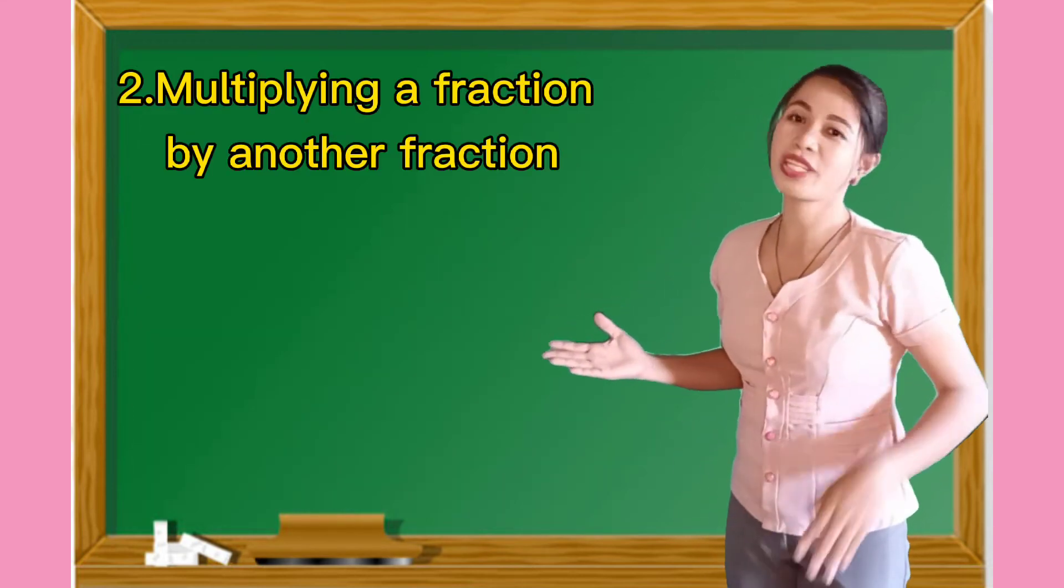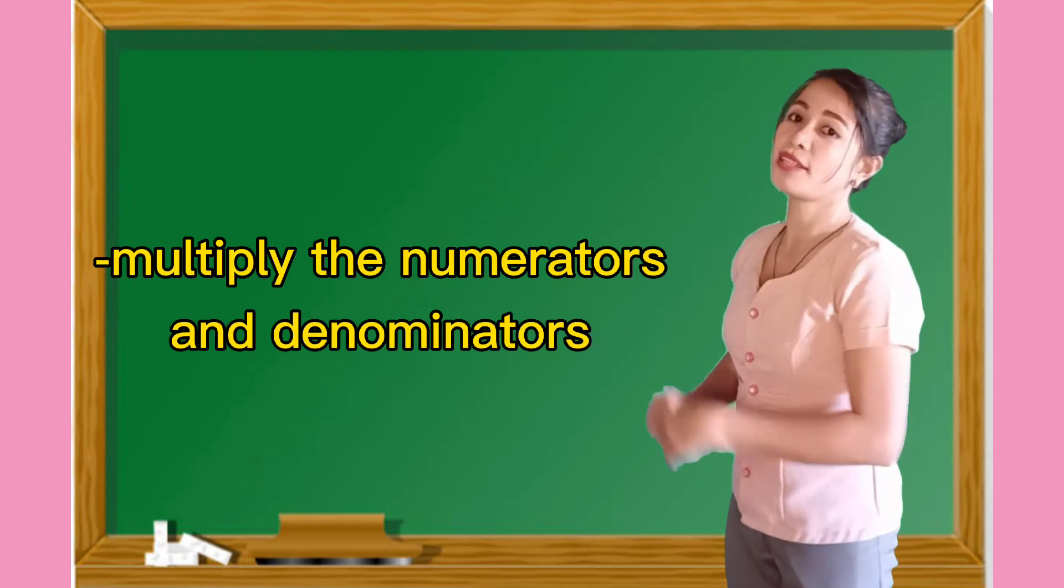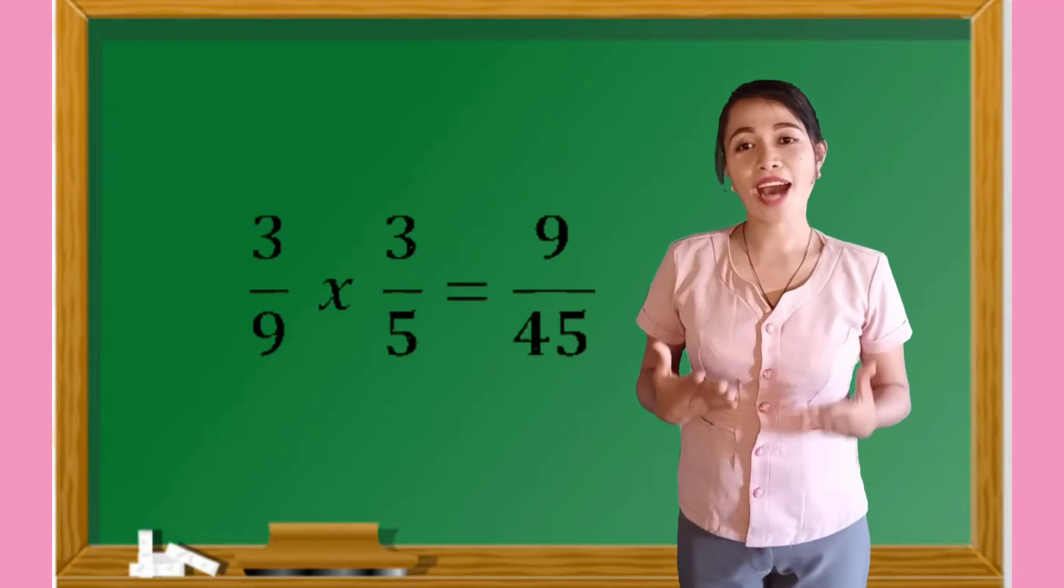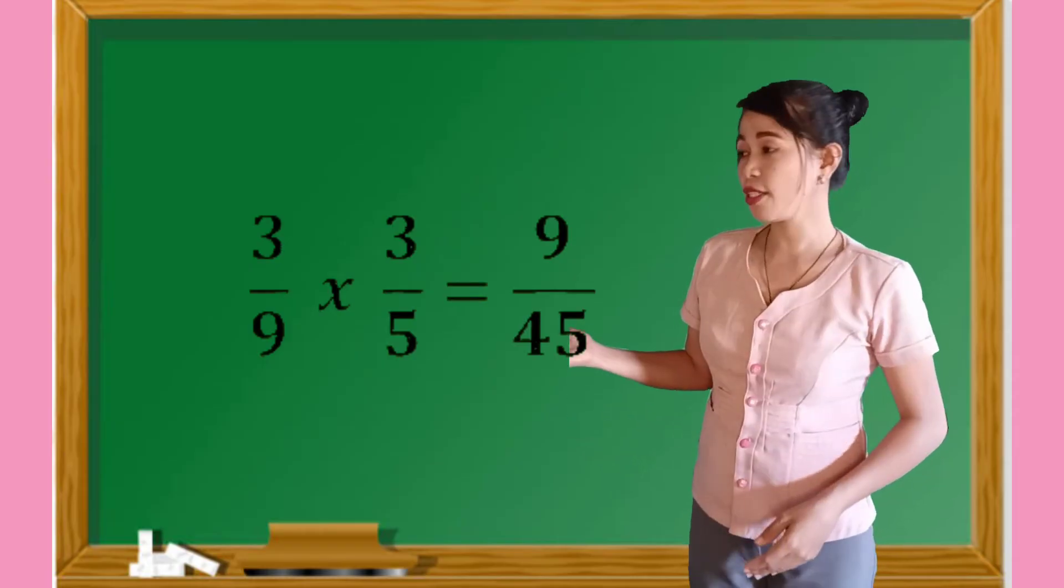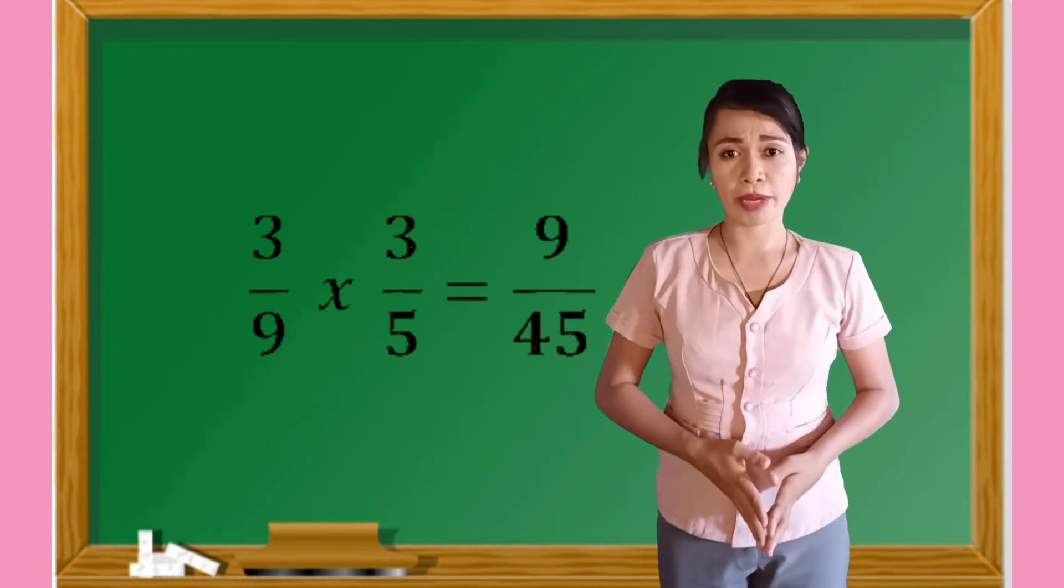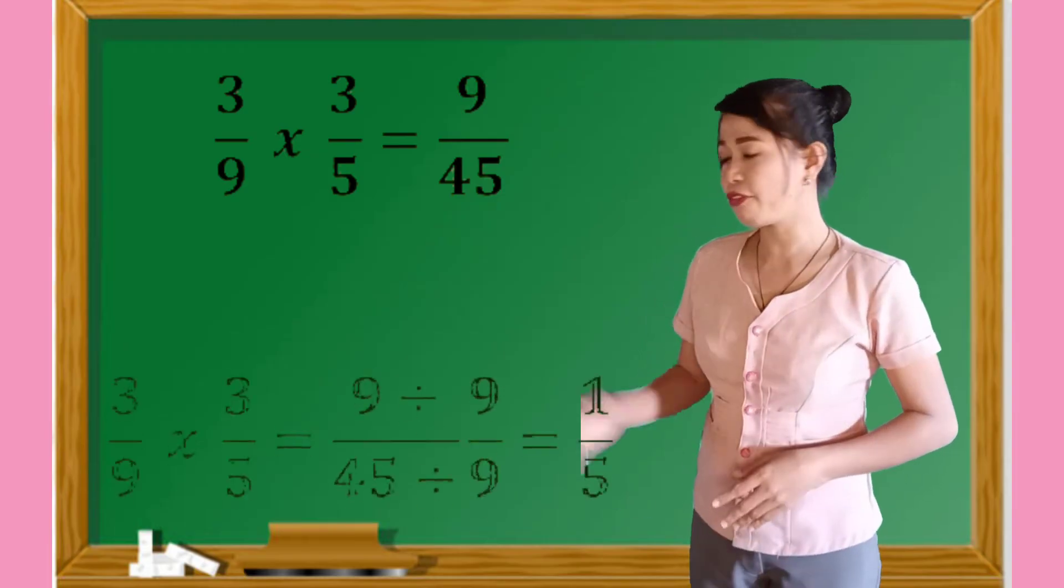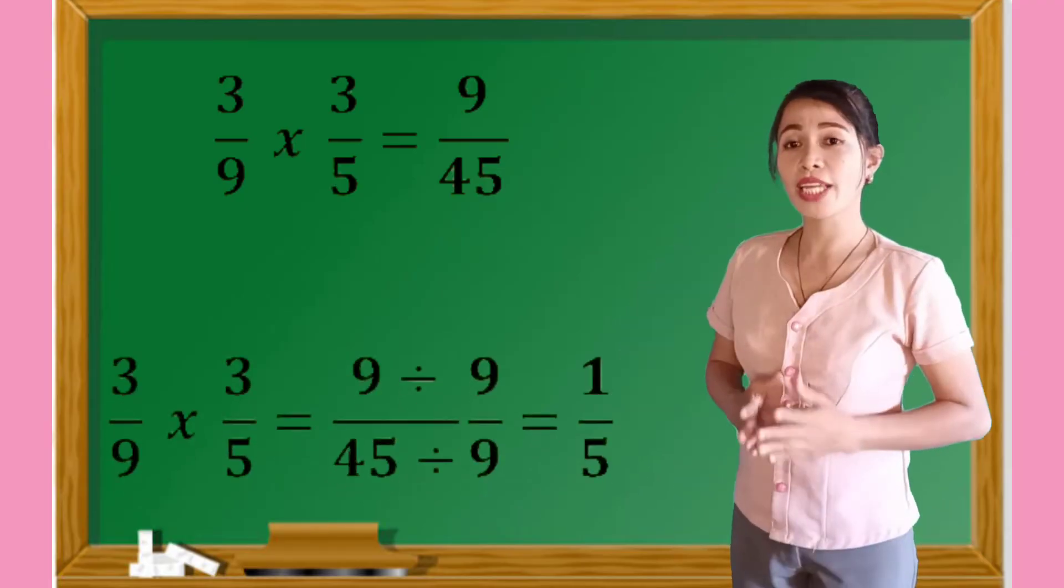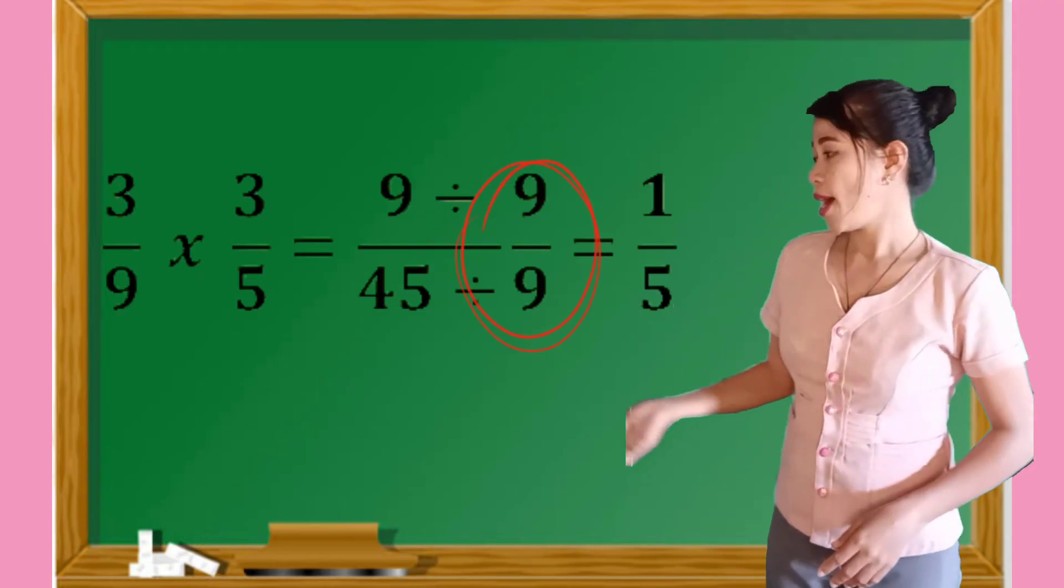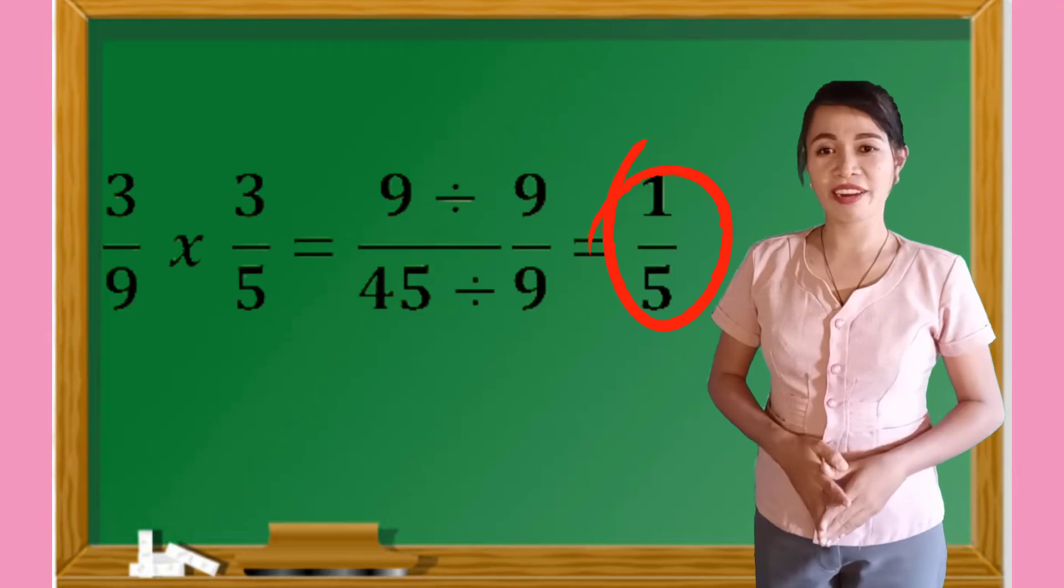Next, multiplying fractions with another fractions. Since they are both in fraction form, we have to multiply their numerators and denominators directly. For example, three over nine times three-fifth. So we have to multiply first the numerators, which is nine. And their denominator goes to 45. So the answer now here is nine over 45. So nine and 45 is not yet in the lowest term. We have to find their common factors that can be divisible by nine and 45. Greatest common factor is nine. So this nine divided by nine is equals to one, and this 45 divided by nine is equals to five. So the answer now here is one-fifth.